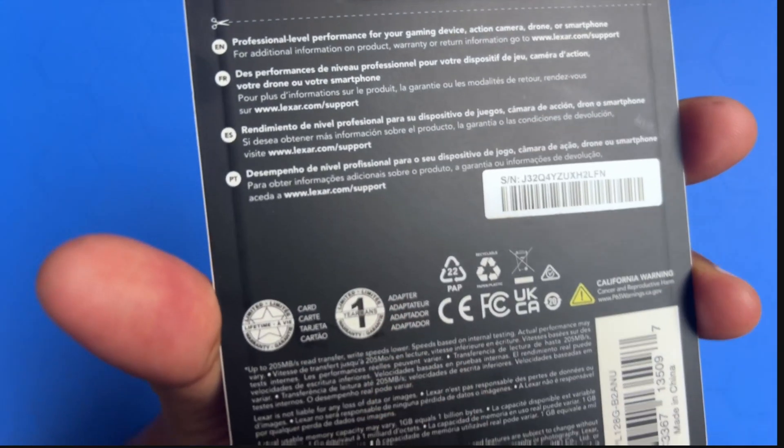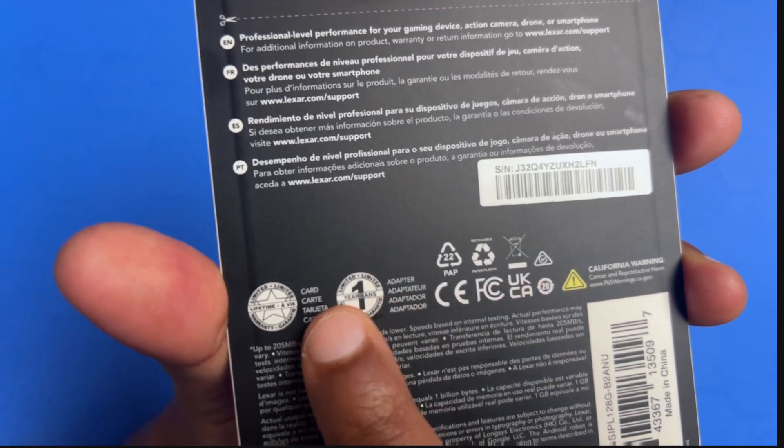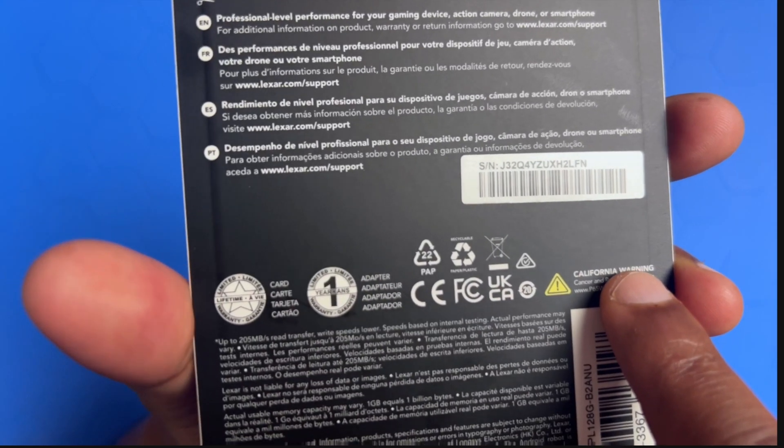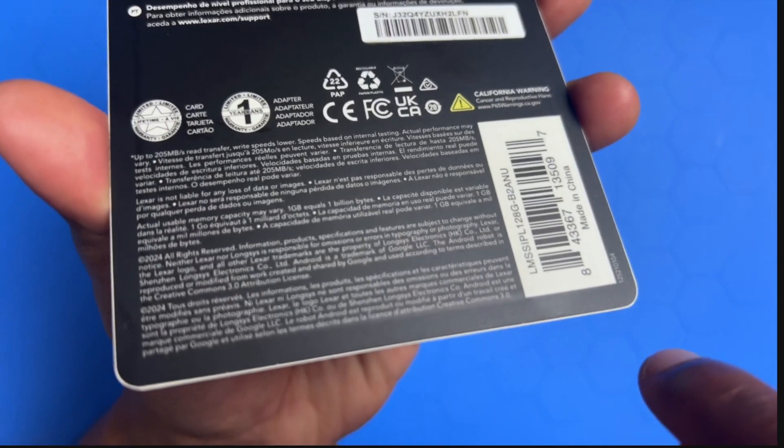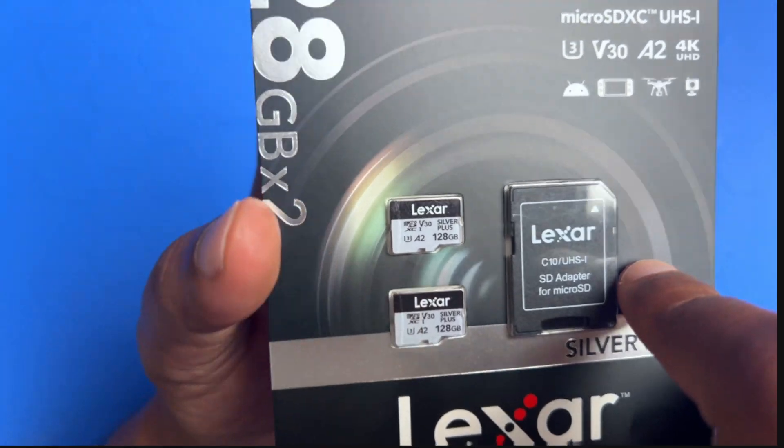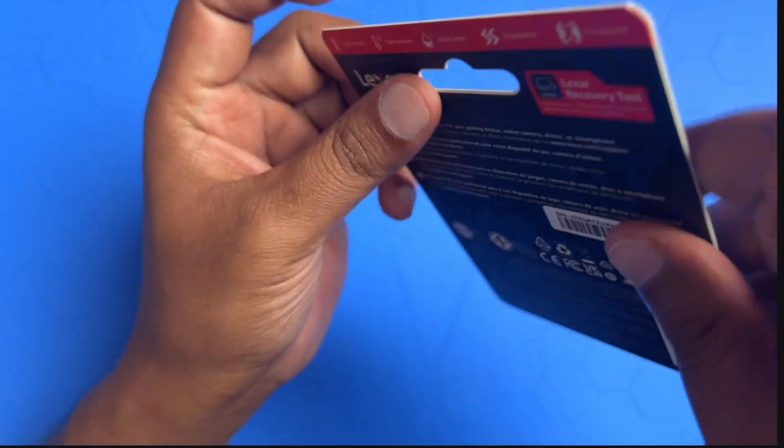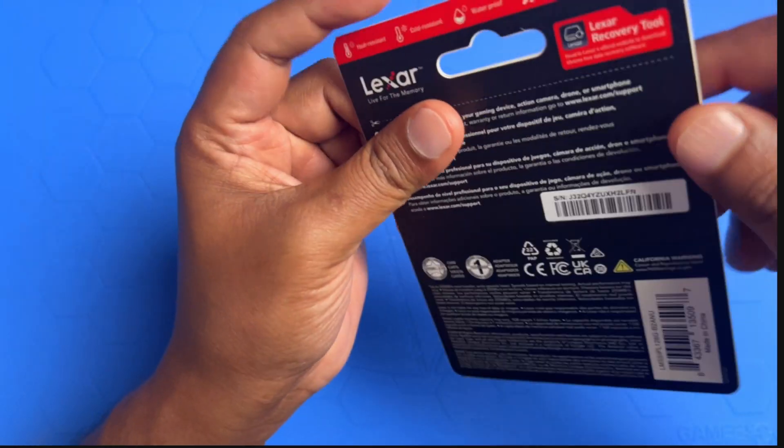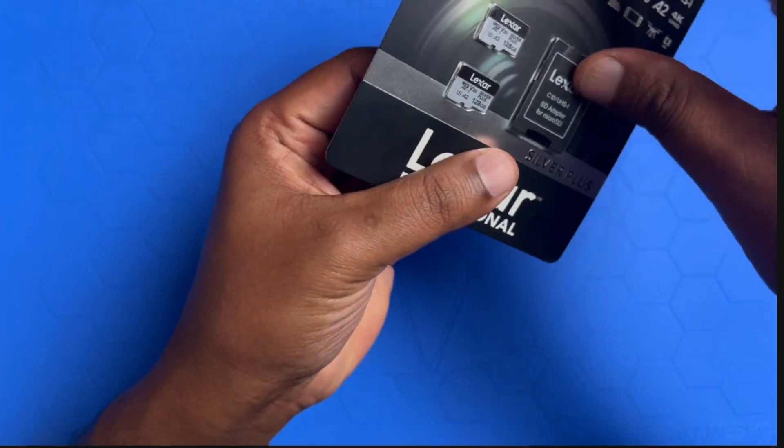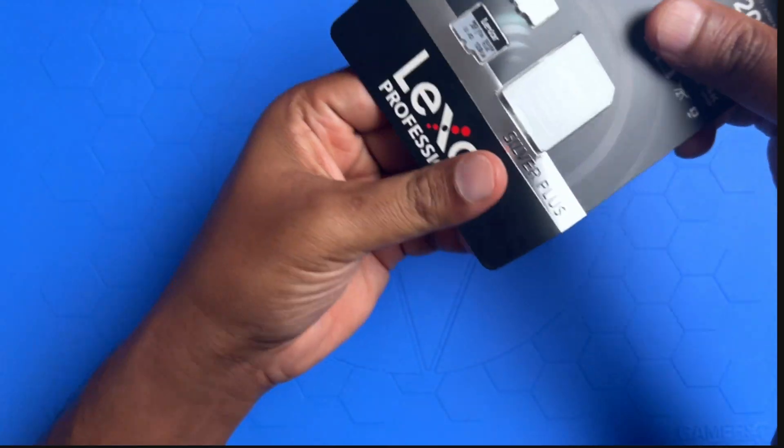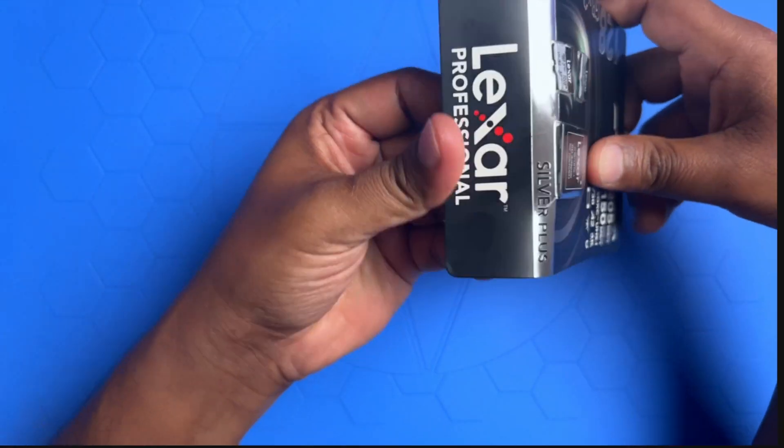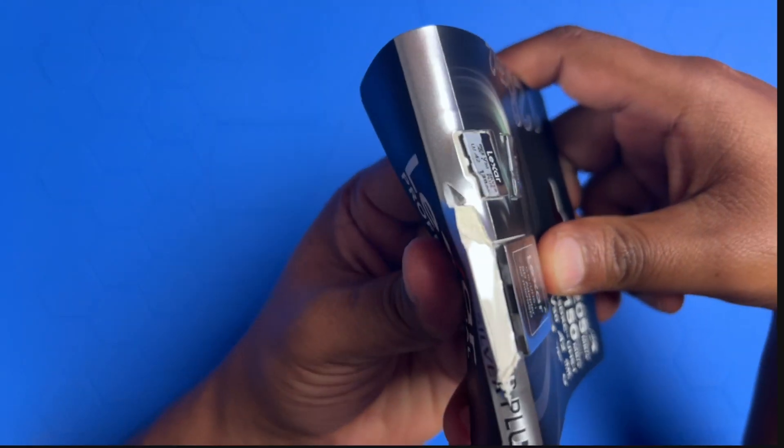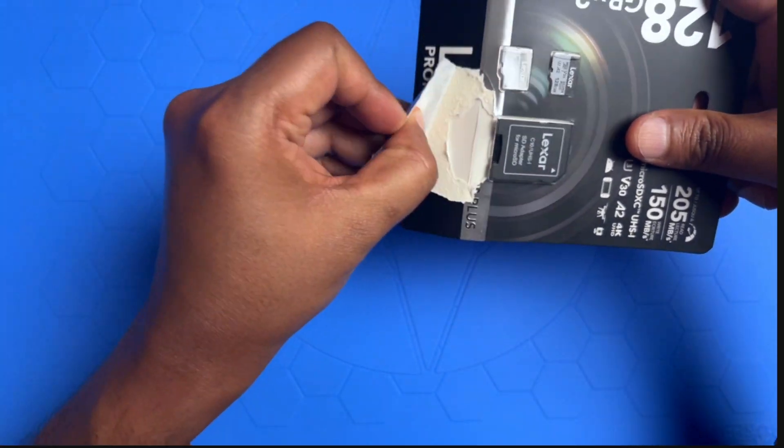I mean, the color, black and silver, super good. You can see the heat resistant, cold resistant, waterproof, shockproof, x-ray proof, all the proofs are there. They have the Lexar recovery tool and a bunch of other stuff. To give someone as a gift, or for someone who is a tech gadget enthusiast, it's worth it. Let's open this and see. I'm not sure how to open it, but if you press this, you can see when I press this, it just pops up.